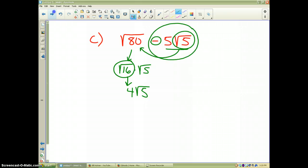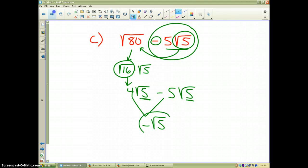So then I bring down the rest of the problem which is minus 5 square roots of 5. The radicand or the numbers inside are the same, so that means I can take 4 minus 5 which is negative 1. We don't write the 1 and so I have negative square root of 5 as my final answer. That should help you complete the assignment on section 1.3, and that is how you add and subtract square roots.